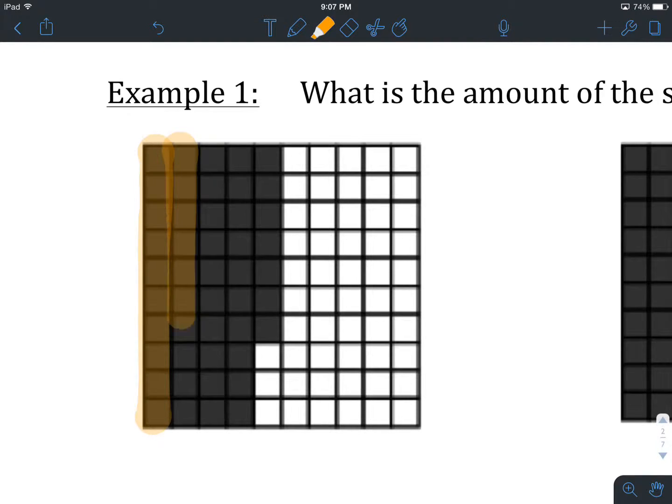20, 30, 40, 1, 2, 3, 4, 5, 6, 7. So we have 47 squares shaded in total out of 100.